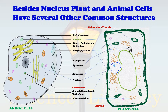Both cell types also share vacuoles — smaller in animal cells and larger in plant cells. Rough endoplasmic reticulum, which has ribosomes on its surface, is present in both plant and animal cells. Both plant and animal cells also have a Golgi apparatus, and there are lysosomal structures in both animal and plant cells as well.